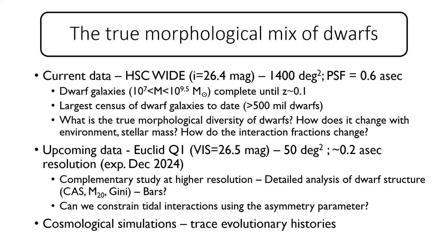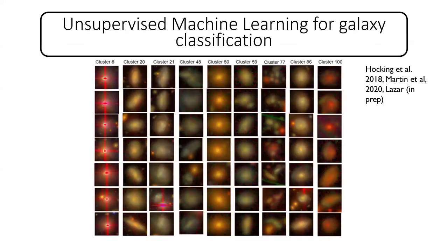Q: The COSMOS field is quite small and you have a narrow redshift range — do you think your results could be affected by not sampling enough environments? A: That's definitely true. The COSMOS field is thought to be a low-density environment at redshift 0.1, so if you increase the redshift range you will probe more environments, and the fraction of red early-types might increase as you encounter more small clusters and higher-density environments. But what this study was designed to show is what kind of studies we can do in the dwarf regime with the depth of HSC.